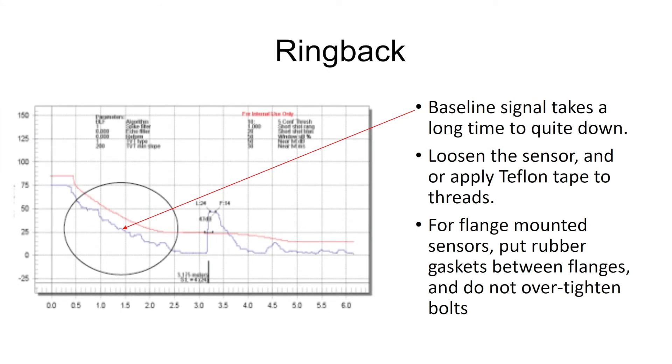So how do we take care of ringback? If the sensor is thread mounted, I want to loosen it so it's just barely hand tight. If necessary, put a couple layers of Teflon tape around the threads. For a flange mount, take the sensor off the flange, put one or two rubber gaskets between the vessel flange and the sensor flange, and just hand tighten the bolts if you can. I want to get rid of that acoustic coupling between the sensor and what it's mounted to.